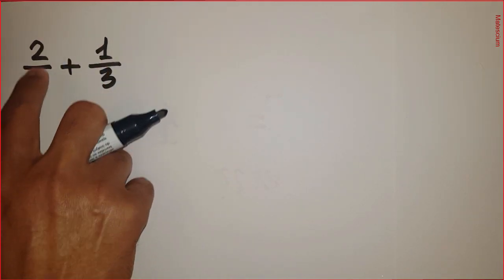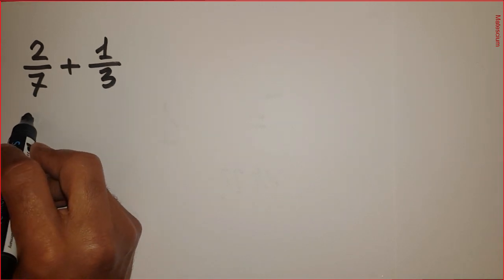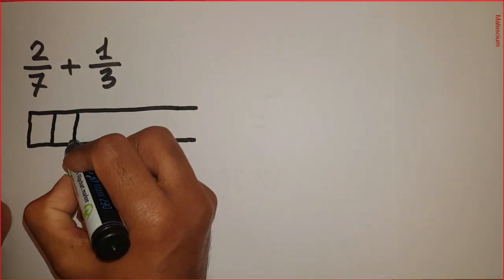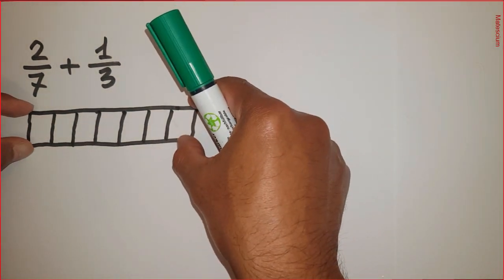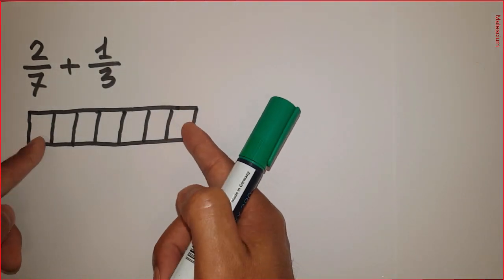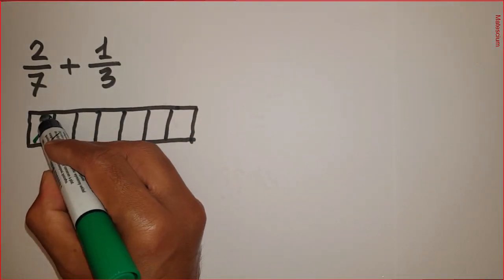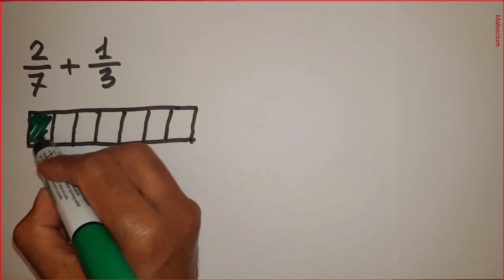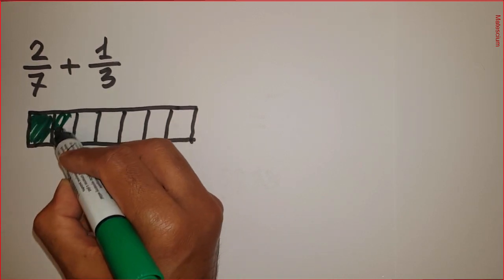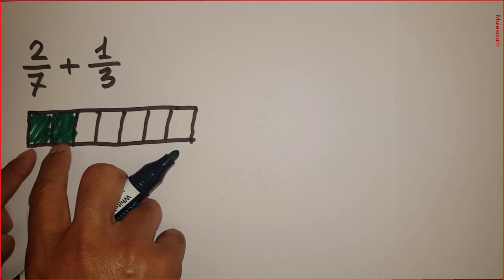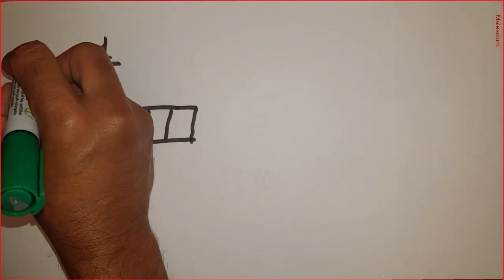2 over 7 means 2 out of 7. I can draw this part graphically like this way. This rectangle subdivided into 7 parts and out of this 7 I can take out these two by different color. These two blue boxes represent these two.